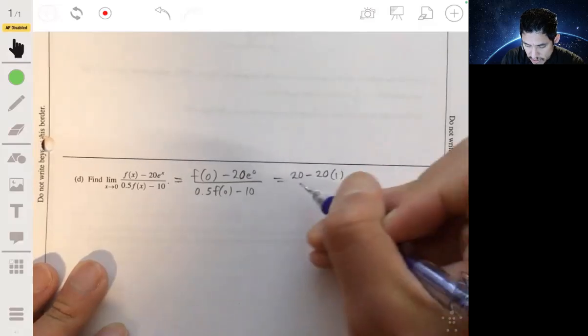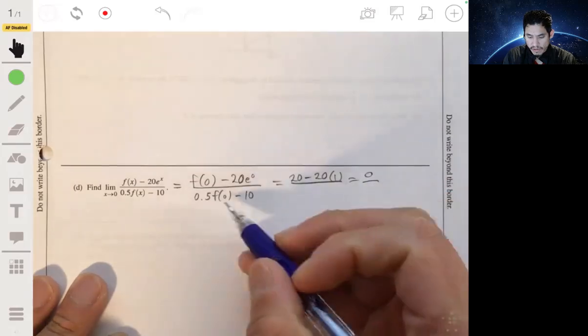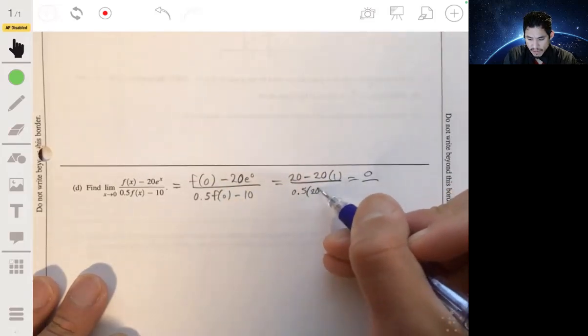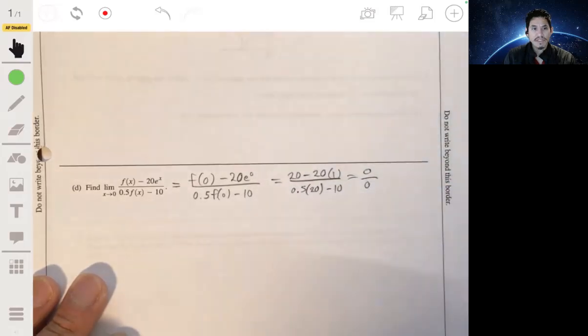The top becomes 0. The bottom becomes 0.5 times 20 minus 10. That just becomes 10 minus 10. So we get 0 over 0, so we get indeterminate expression.